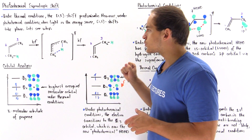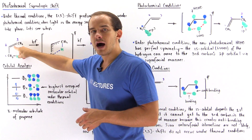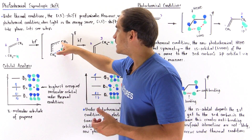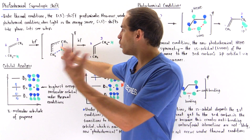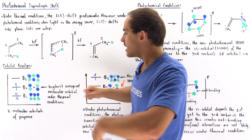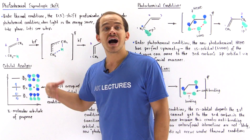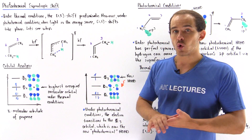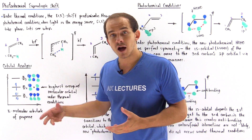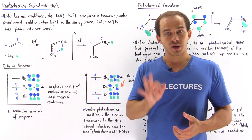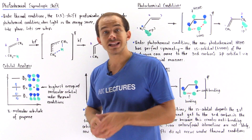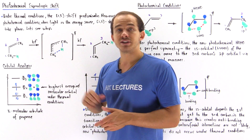Now how many electrons are found in the pi system within our transition state? Two electrons are found in the pi bond, and one of those electrons comes from the breaking of this bond here. As the bond breaks, one of the electrons ends up in the pi system, and so to determine what the highest occupied molecular orbital is under thermal or photochemical conditions, we have to fill up these orbitals with three electrons. Two electrons go into the lowest orbital, phi 1, and the last electron ends up in phi 2.